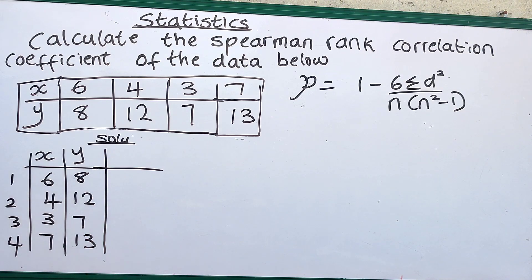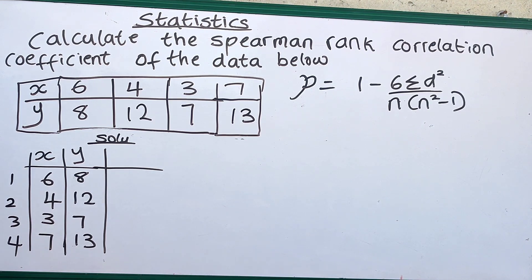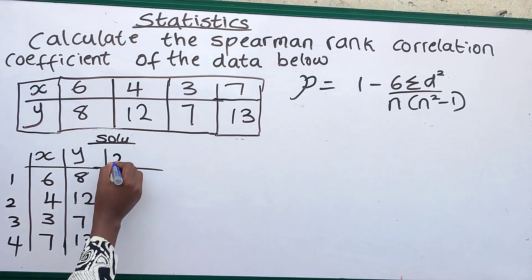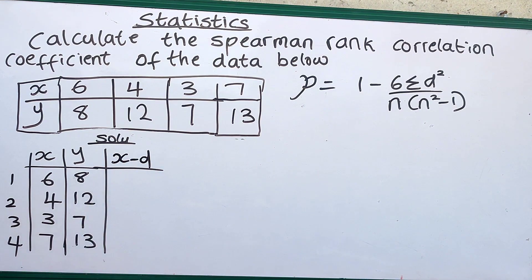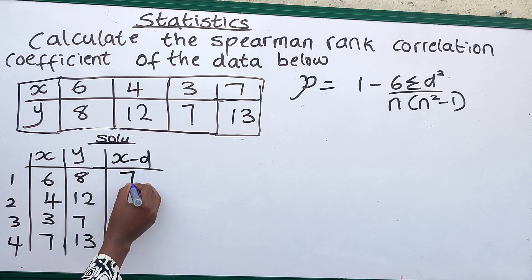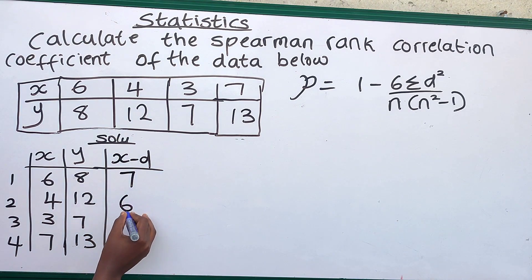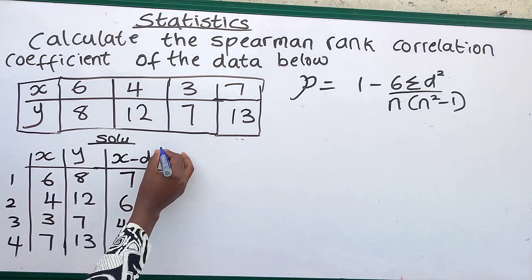After doing that, the next thing we are going to do is arrange our X in descending order. X in descending order: 7, 6, 4, and 3.